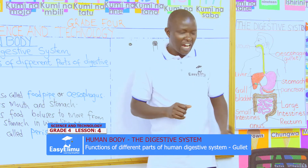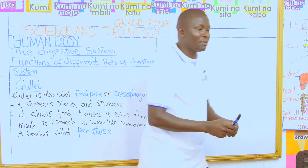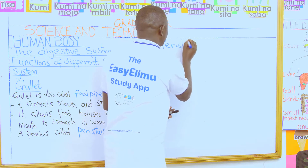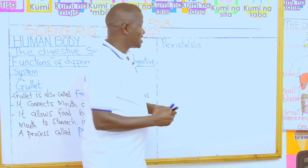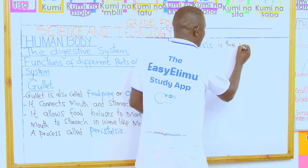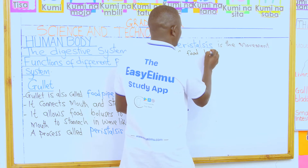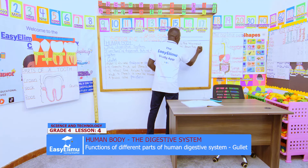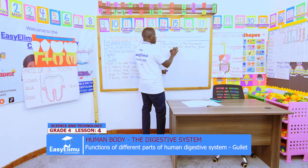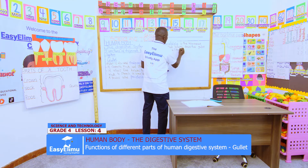Peristalsis — I have a question for you. Who can tell us what is peristalsis? Who can give us the meaning of the word peristalsis? Yes, John — what is peristalsis? Peristalsis is the movement of food boluses down the esophagus, or the gullet, in wave-like movement.